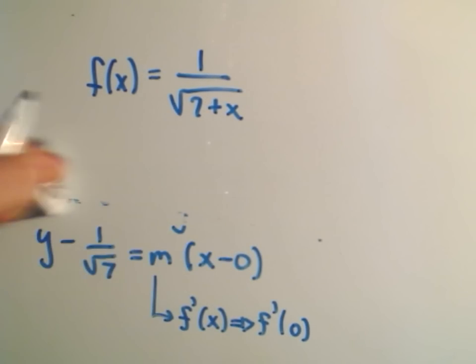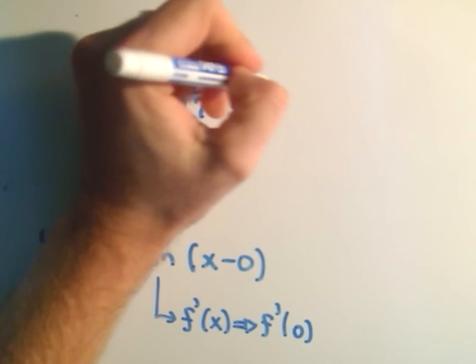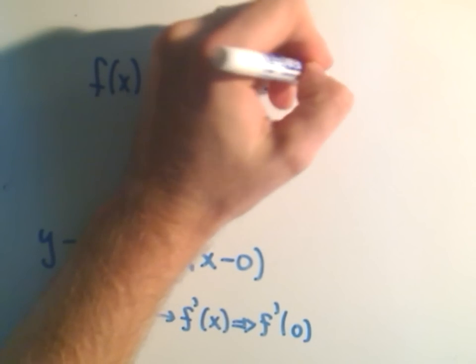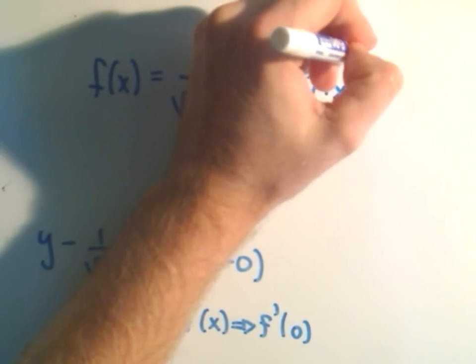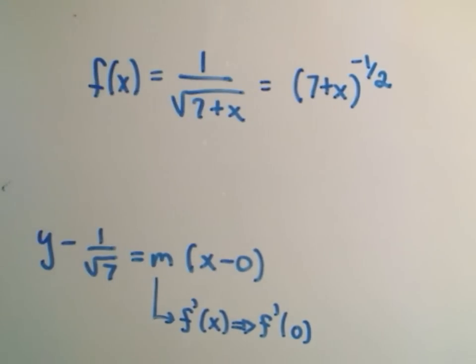Let's take the derivative. You could use the quotient rule on this. That, to me, would be a bit overkill. Just bring the 7 plus x to the upstairs by making it a negative exponent.